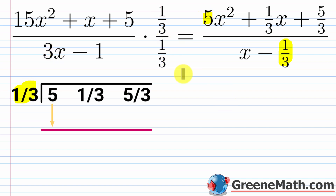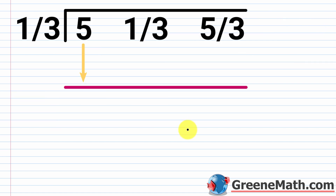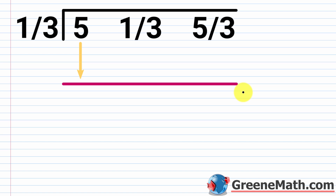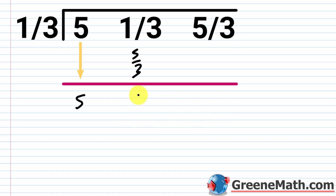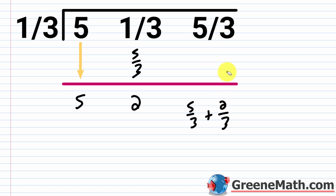So we grab this 5, the 1/3, and the 5/3 and set up synthetic division with k equals 1/3. Drop the 5 down, then 1/3 times 5 is 5/3. And 1/3 plus 5/3 equals 6/3, which is 2. Then 1/3 times 2 is 2/3, and 5/3 plus 2/3 is 7/3. So that last value is 7/3.